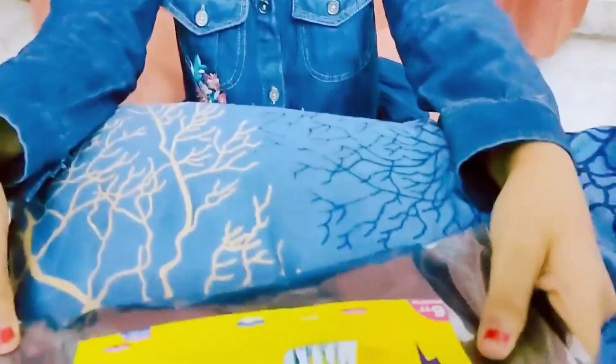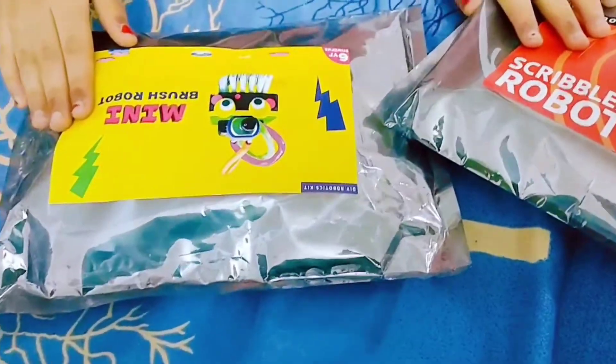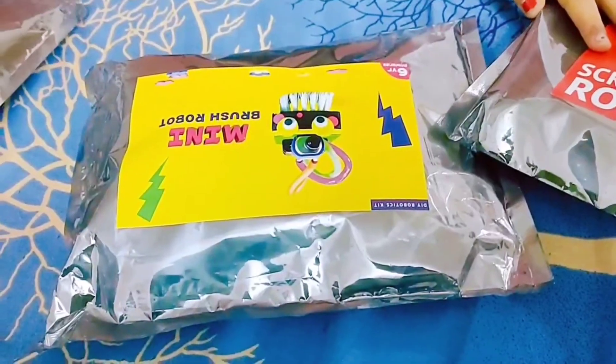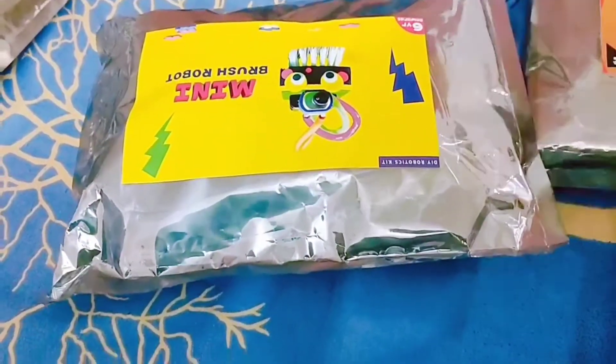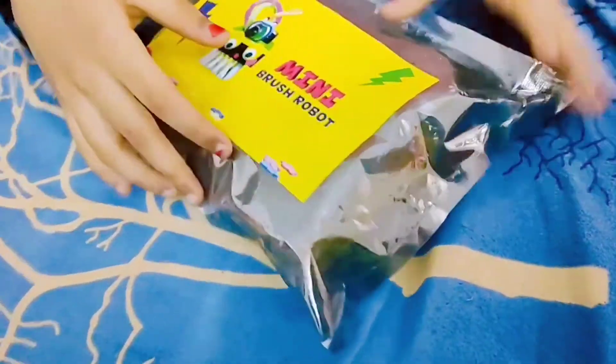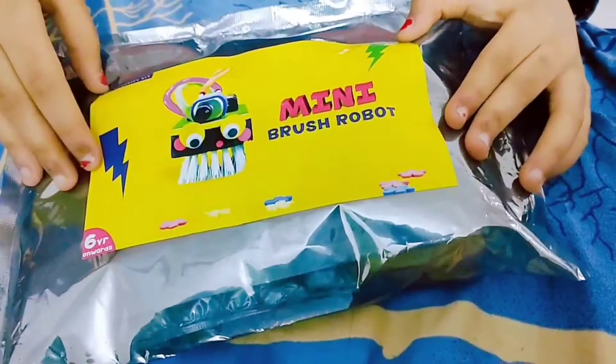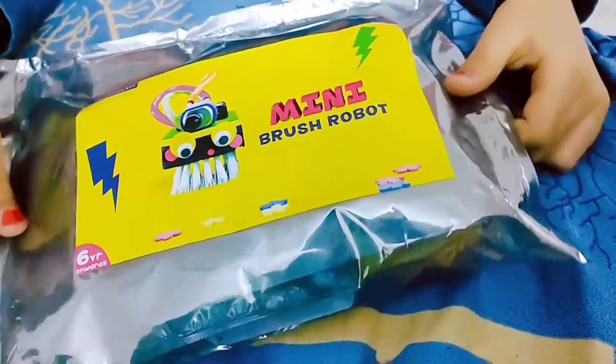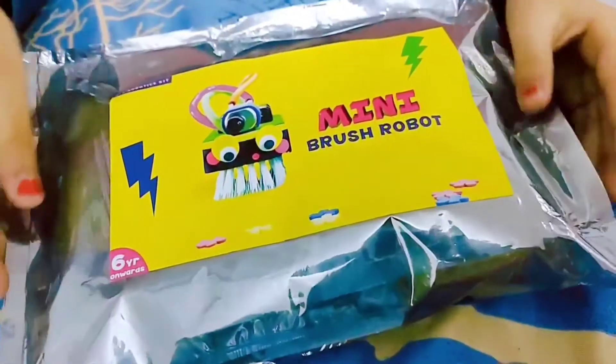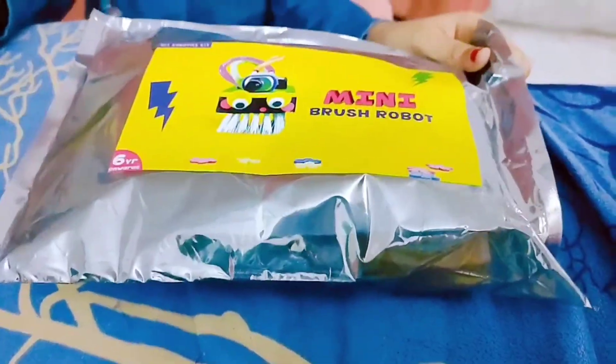I'm gonna do three parts of this video. In one I'm gonna do the scribbler robot, in one the mini brush robot, and in one the motorboat. In this video I'm gonna use the mini brush robot. I chose this because my dollhouse is full of confetti. You can watch my birthday vlog video if you want to find out. Now let's get snipping and doing.